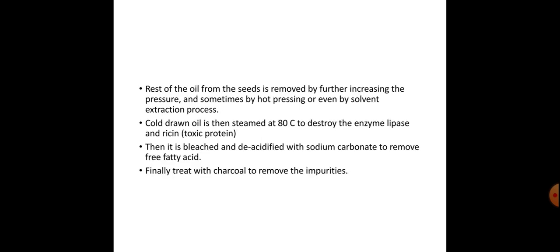The rest of the oil from the seed is removed by further increasing pressure, and sometimes by hot pressing or by solvent extraction process. Cold-drawn oil is then steamed at 80 degrees Celsius to destroy the enzyme lipase and toxic protein, that is ricin. Then it is bleached and de-acidified with sodium carbonate to remove free fatty acids. Finally, treated with charcoal to remove impurities.